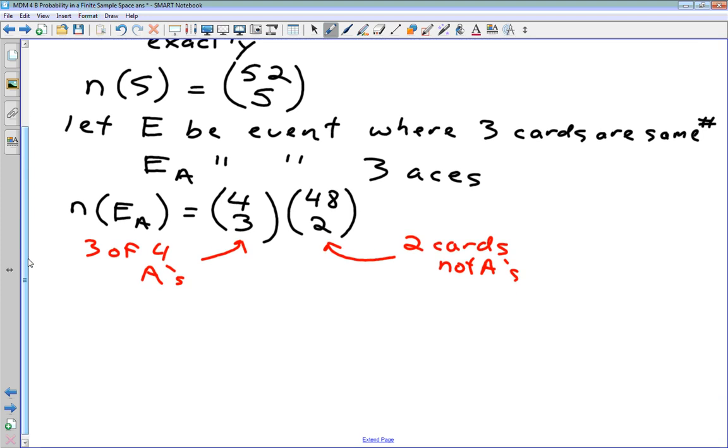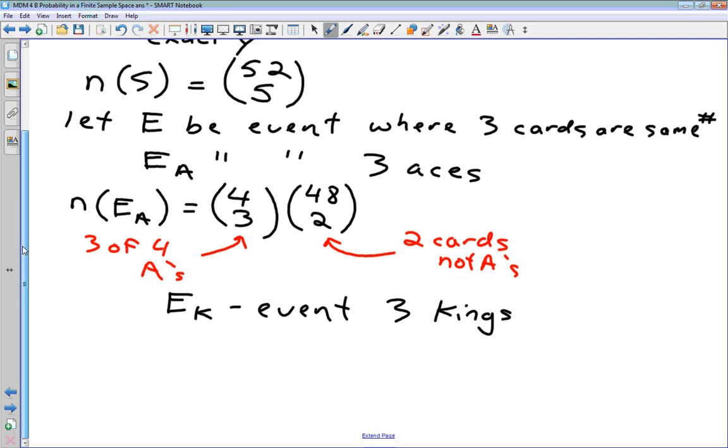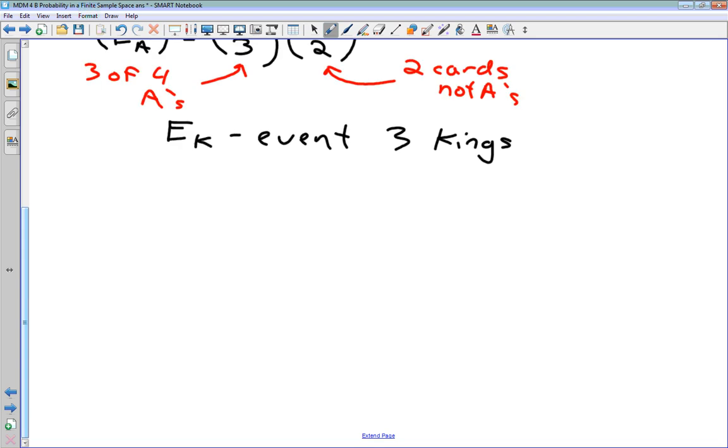We could think of another sort of sub-event here, where we have, I'll call this E_K, where we have, this is the event where we have three kings in our hand. What's going to be the number of ways that we can get three kings in our hand?